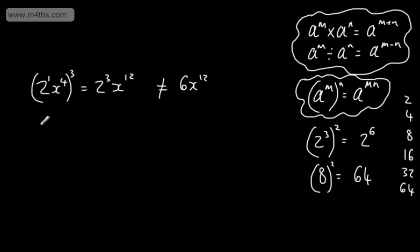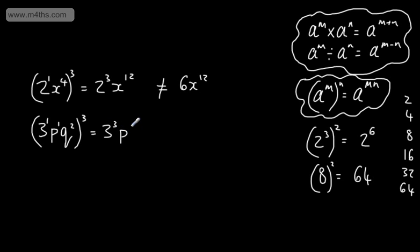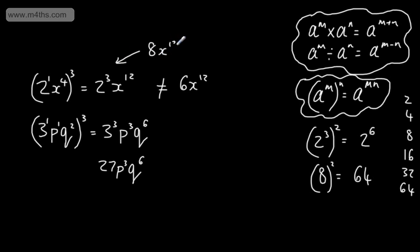For example, if we have 3pq squared, raised to the power of 3, I put a little one on the 3 and on p. That gives me 3 to the power of 3, p to the power of 3, and q to the power of 6. We would write this as 27p cubed q to the 6th. Similarly, we'd write the earlier example as 8x to the 12th. That is the first rule: raising to a power.